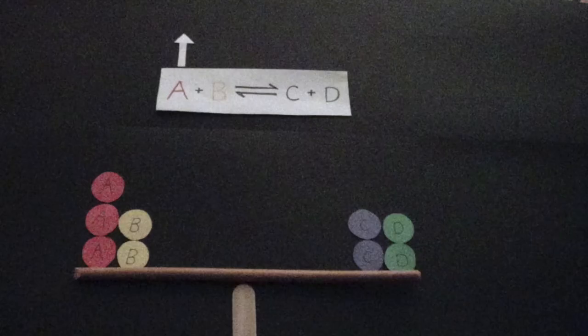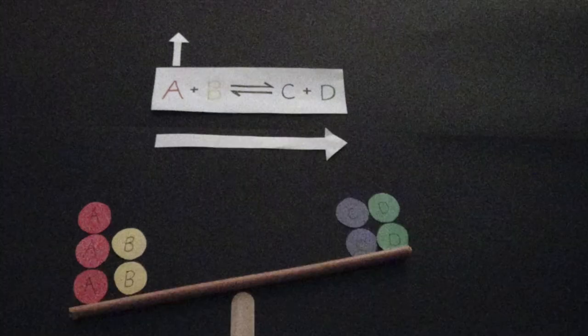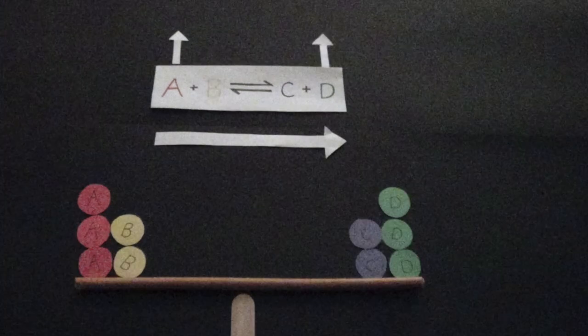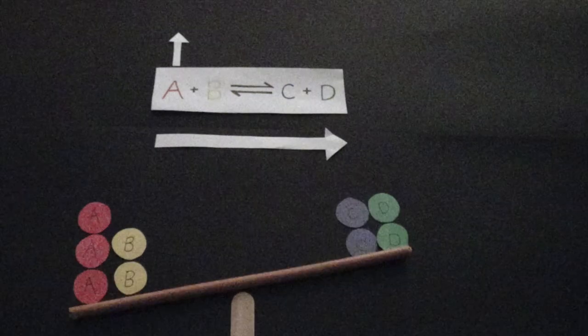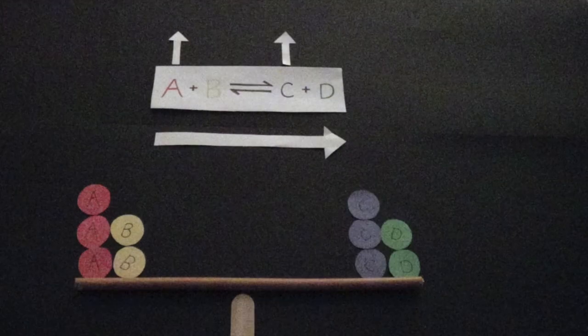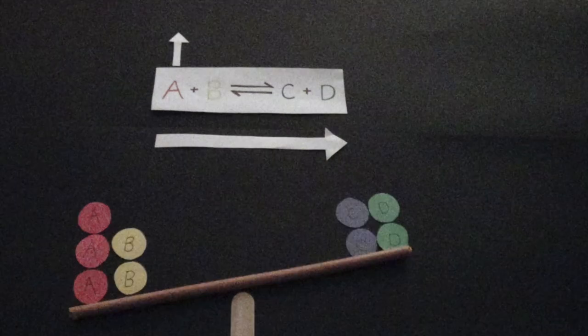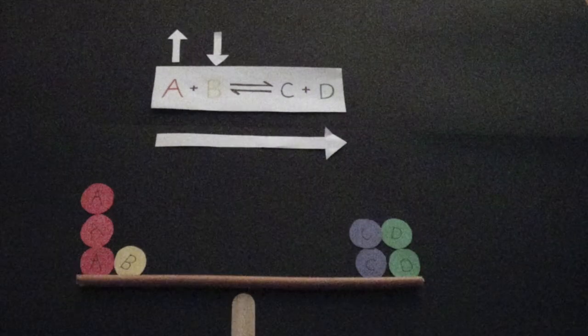If you increase the concentration of reactant A, then the equation will shift to the right in order to re-establish equilibrium. One way to re-establish equilibrium is to increase the concentration of product D. Another way is to increase the concentration of product C, or you can decrease the concentration of reactant B.